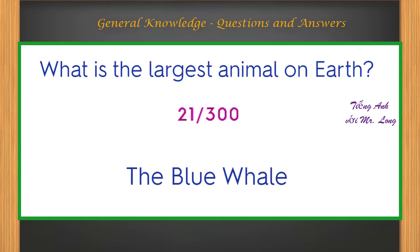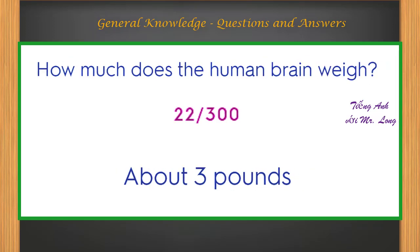What is the largest animal on Earth? The blue whale. How much does the human brain weigh? About three pounds.